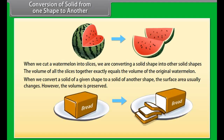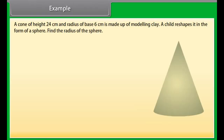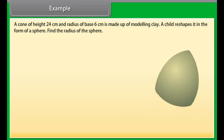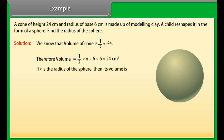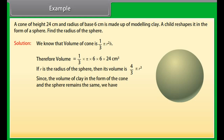Conversion of solid from one shape to another: when we cut a watermelon into slices, we are converting a solid shape into other solid shapes. Regardless of the size and shape of the slices, the volume of all the slices together exactly equals the volume of the original watermelon. When we convert a solid of one shape to another, the surface area usually changes; however, the volume is preserved. Similarly, when cutting bread into slices, the volume of all slices equals the volume of the original object.